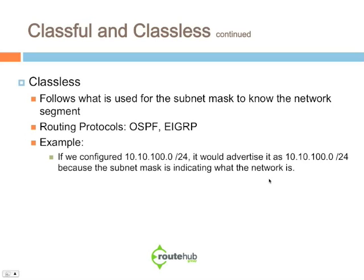Classless does kind of the opposite. It follows what is used for the subnet mask to understand what the network segment is. Some Classless routing protocols would be OSPF and EIGRP. Using the same example, if we configured 10.10.100.0/24, it would advertise it as 10.10.100.0/24 because the subnet mask is indicating what the network portion is for that route.